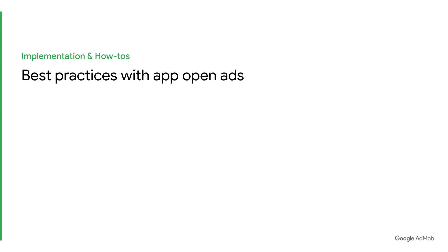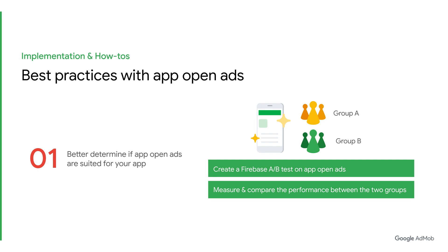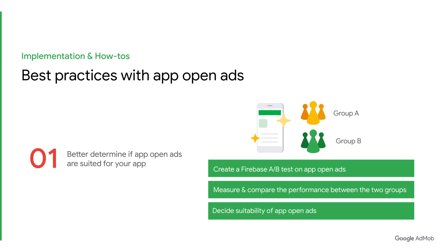Let's begin with the best practices. First, how can you find out if AppOpenAds are a good fit for your app? A great way to do that is by running a Firebase A/B test on AppOpenAds. You can divide your traffic into two groups — one that sees the AppOpenAds and one that does not. From there, measure and compare the performance between the two groups on key user metrics such as retention and app rating. This allows you to decide if the new ad placement is suitable for your app. After all, different ads perform better in different apps, app categories, or regions. For more information on how to successfully set up a Firebase A/B test, you can check out our Firebase video series linked in the description box below.